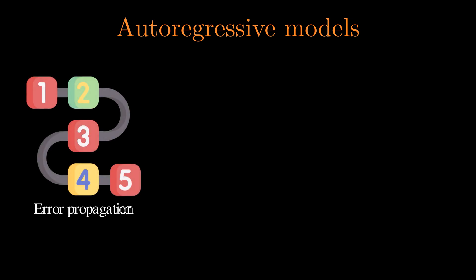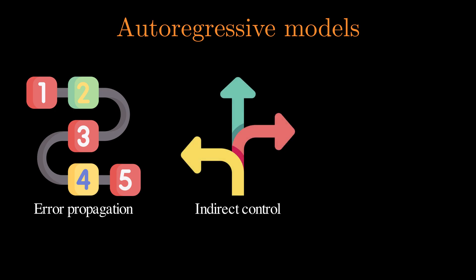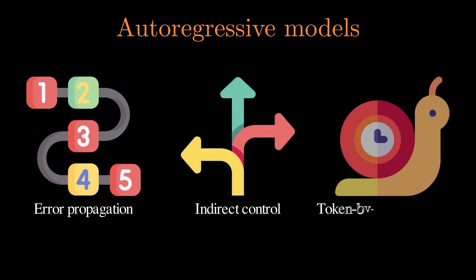First, when we make a mistake predicting the current token, errors get propagated to all future predictions. Second, controlling autoregressive models is difficult. Third, token-by-token generation is slow because the model cannot predict the next token until all previous ones are predicted.